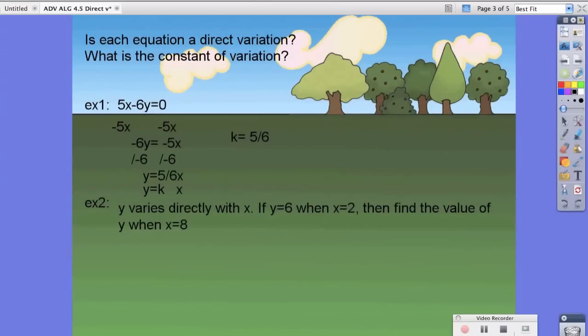Now, looking back at the example they gave us, it says if y equals 6 when x equals 2, then find the value of y when x equals 8. So notice they put a comma in here, and a comma or a period in math usually denotes that there's a separation in the equation. So that's what we're going to do first.